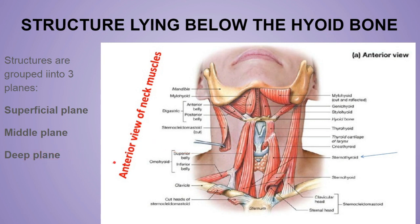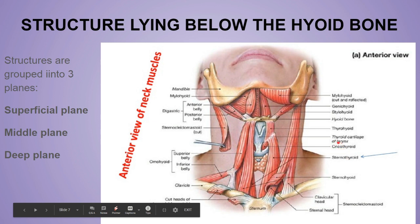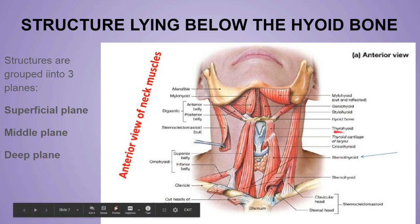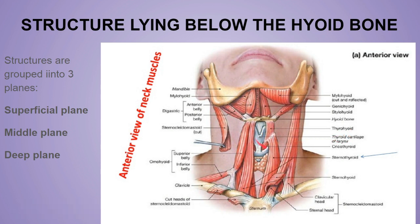In the deep plane there are seven structures. First, the thyrohyoid membrane, which is pierced by the internal laryngeal nerve and the superior laryngeal artery. Second, the thyroid cartilage. Third, the cricothyroid membrane, on whose surface the cricothyroid arteries anastomose. Fourth, the cricothyroid muscle, supplied by the external laryngeal nerve. Fifth, the cricoid cartilage. Sixth, the trachea. Seventh, the carotid sheath.